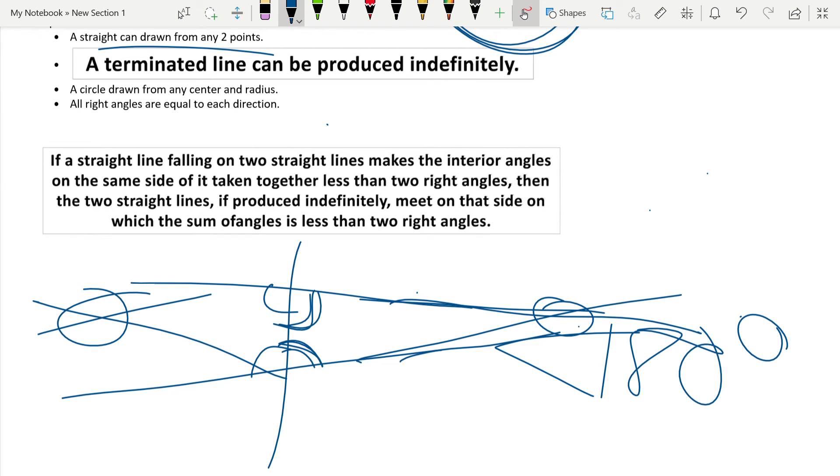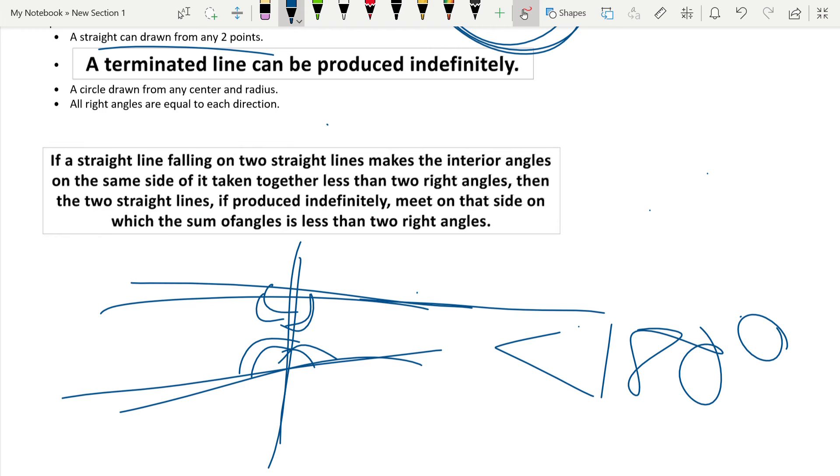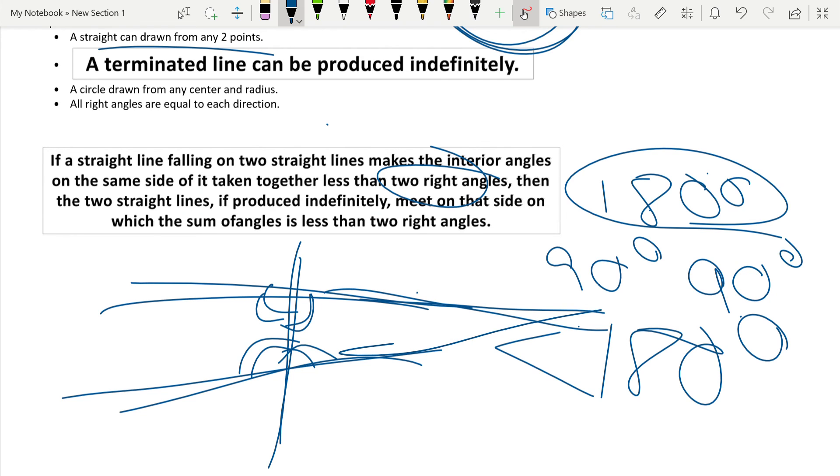Let me just go over it one more time. Here, here, straight falling on two straight lines. Yes, we've got that. Makes the interior angles, interior angles on same side of it taken as less than two right angles. Two right angles is 180 degrees because right angles are 90 plus 90 is equal to 180. Then two straight lines are produced indefinitely, meaning if you extend them, meet on that side on which the sum of angles is less than 180 degrees or two right angles. Hope you got that.